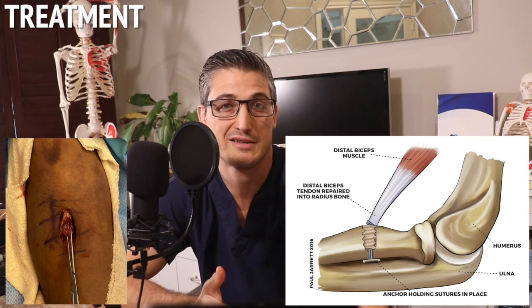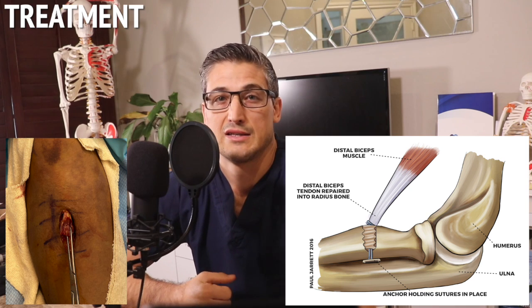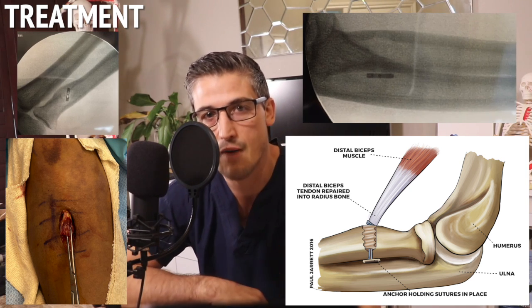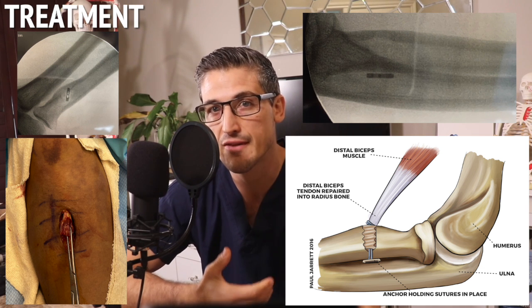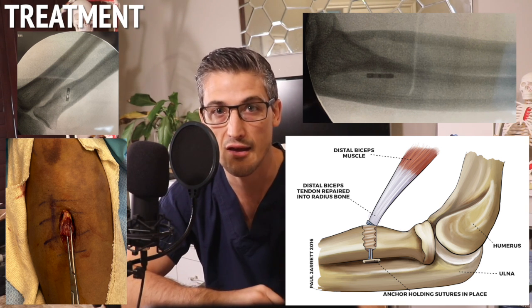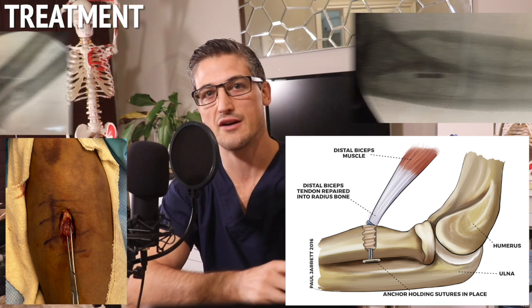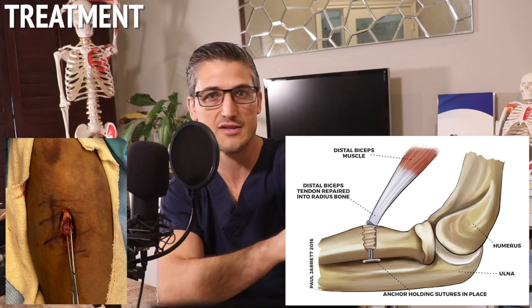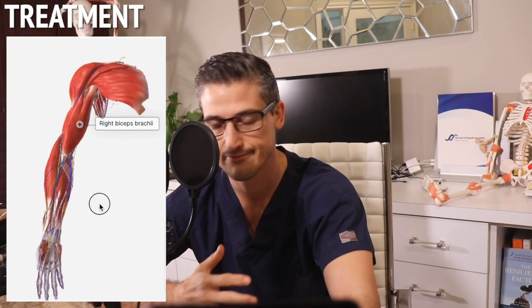Surgery is fairly straightforward in principle. The tendon has usually avulsed off the bone, so you put it back down onto the bone and allow it to heal. This is done in various ways — most commonly with suture connected to a button placed on the opposite side of the bone, or anchors put into the bone, and/or a screw that holds the tendon in place. This can be done through one incision in the front of the arm or a second incision on the back. Issues arise with the inherent complexity of the elbow — there are lots of other structures, nerves, blood vessels, and the elbow is just a complex joint. With surgery, most patients get back to their normal function and appearance, other than having a surgical scar.